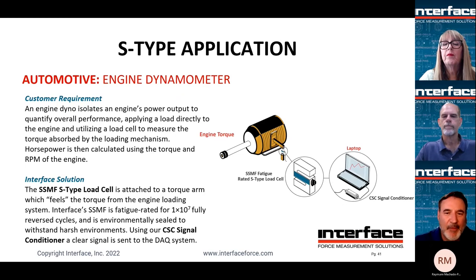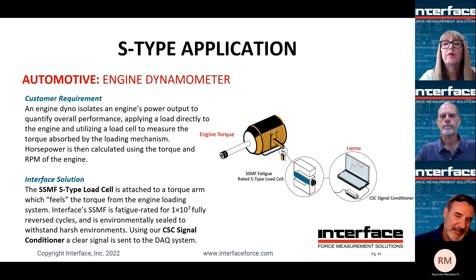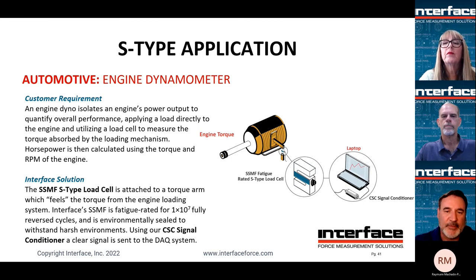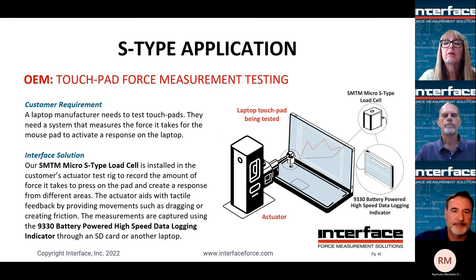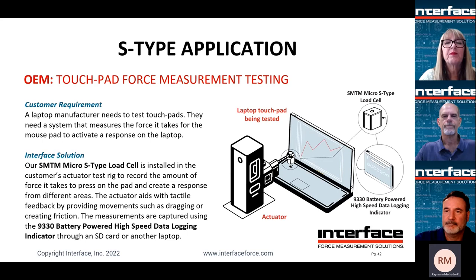Here we have an engine dynamometer — a very common use application for S-Types. In the diagram, you have a motor with a torque arm mounted to it, and the S-Type load cell is mounted there. Any torque the engine produces will shift that arm and the load cell will feed that information back. We're utilizing the fatigue-rated S-Type, and this is using an inline signal conditioner — the CNC — connecting to the customer's data acquisition system.